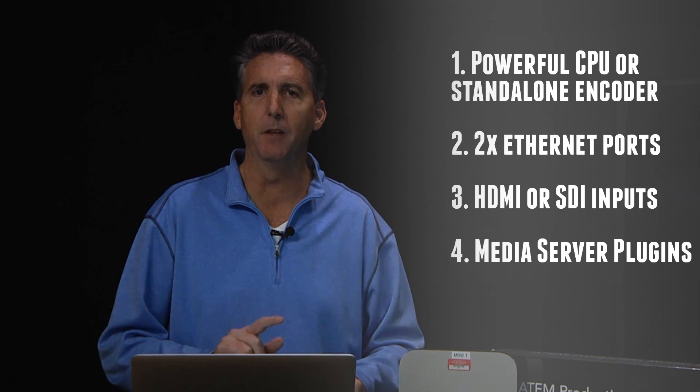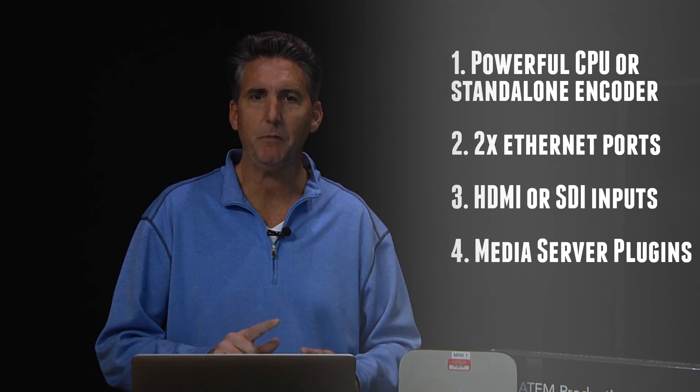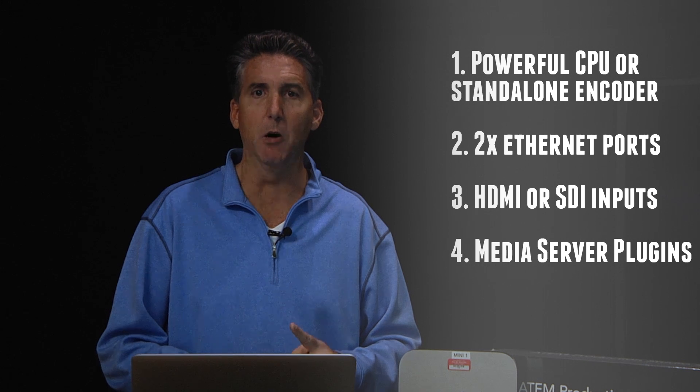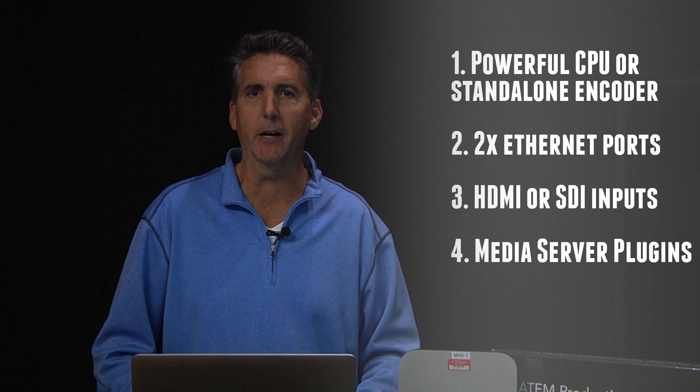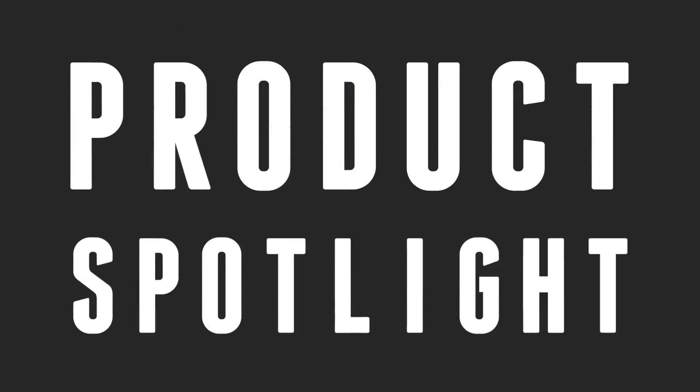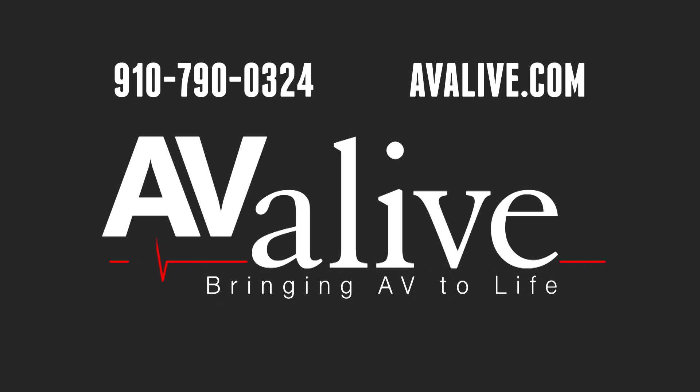So to summarize using the ATEM TV Studio in a live production environment: the things you need are your CPU or standalone encoder, two Ethernet ports, an SDI or HDMI input, and either the Adobe Flash Media software or third-party direct download software from LiveStream or UStream. That's all it takes to stream live to the internet. Give us a call if you need help, and be sure to subscribe to our channel as we'll go into more detail about individual streaming providers and software setup.